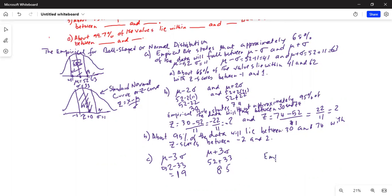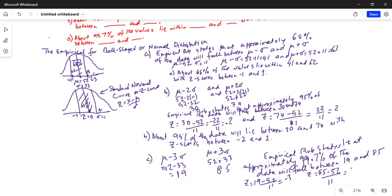So empirical rule states that approximately 99.7% of the data will fall between 19 and 85. So again you can check the z-score for 19 is 19 minus 52 divided by 11 which is minus 3, and z-score for 85 is 85 minus 52 by 11 which is positive 3.